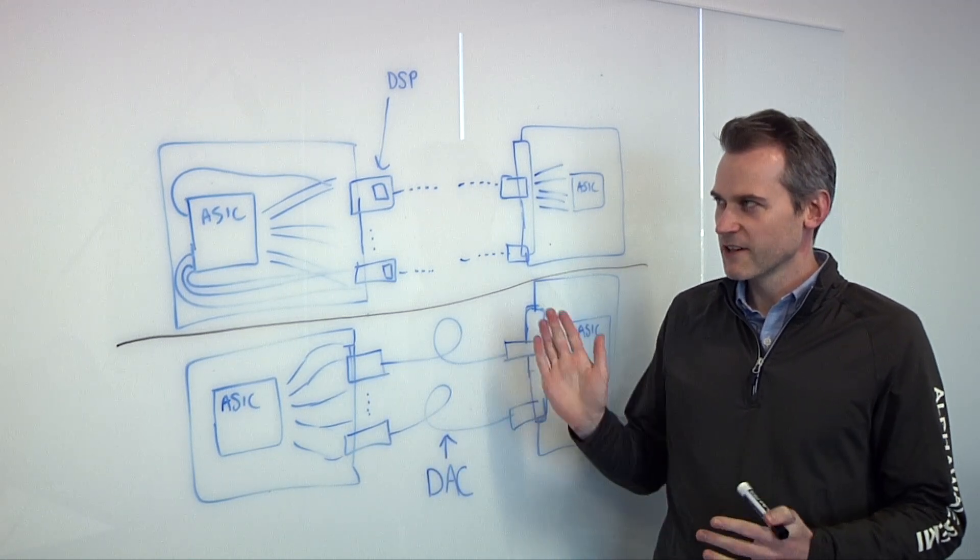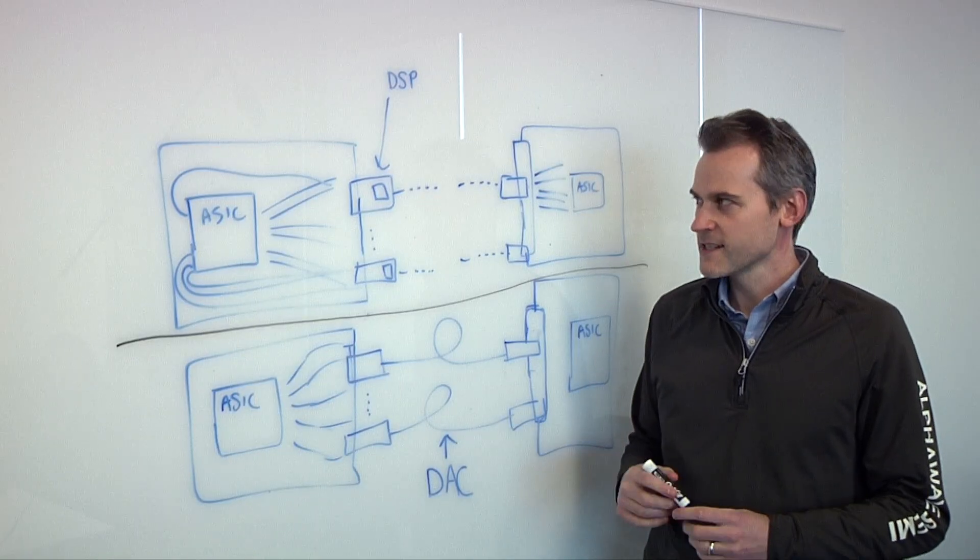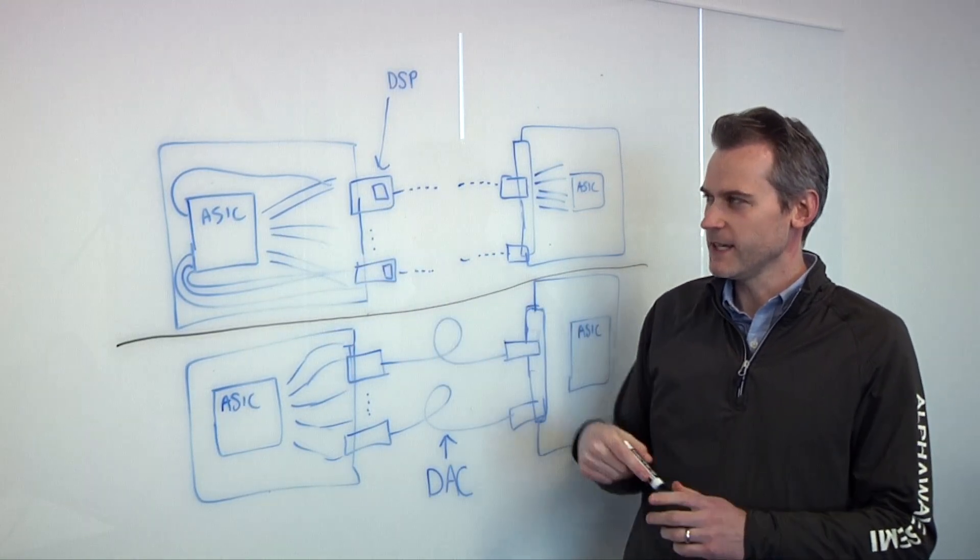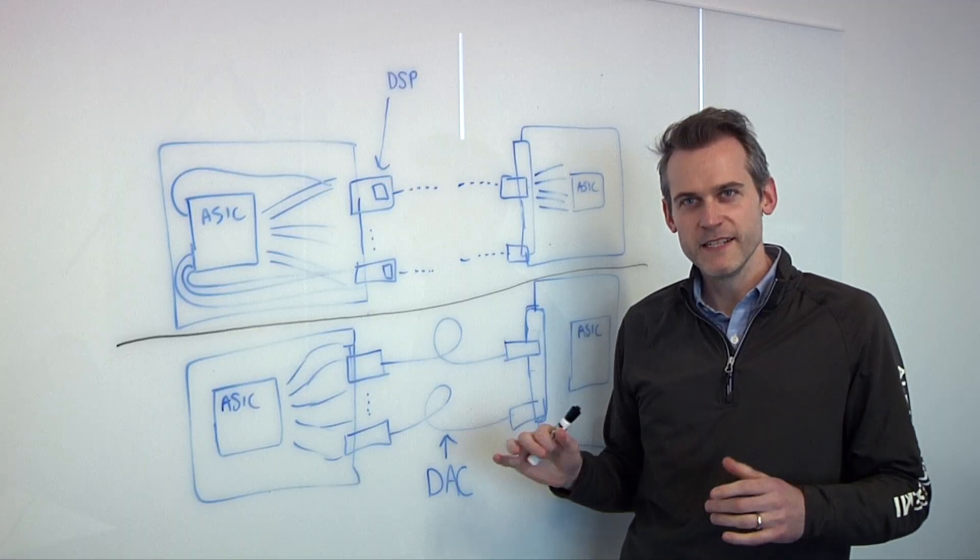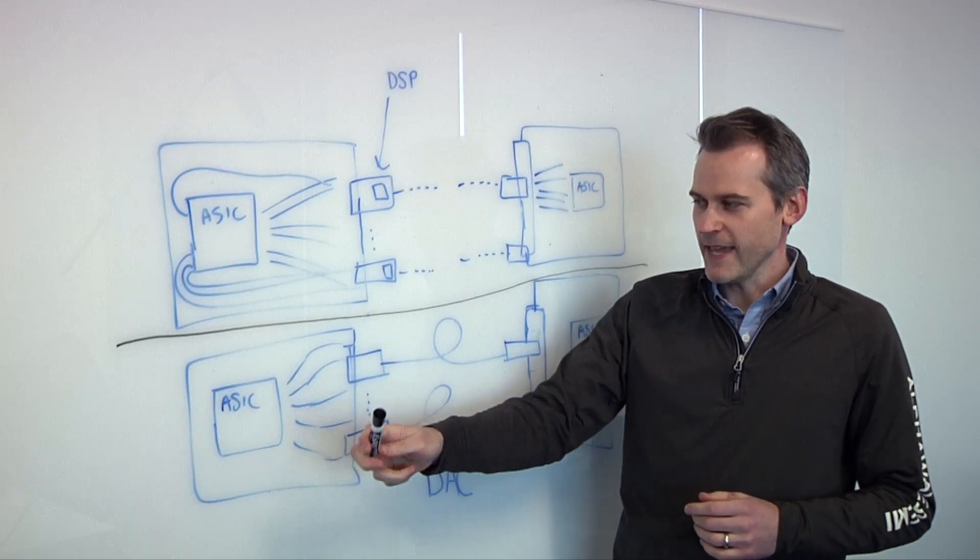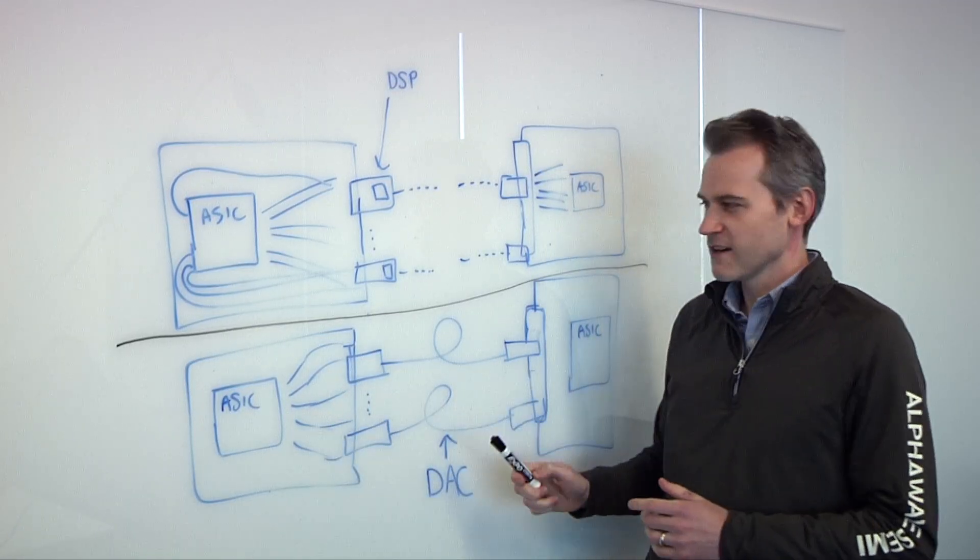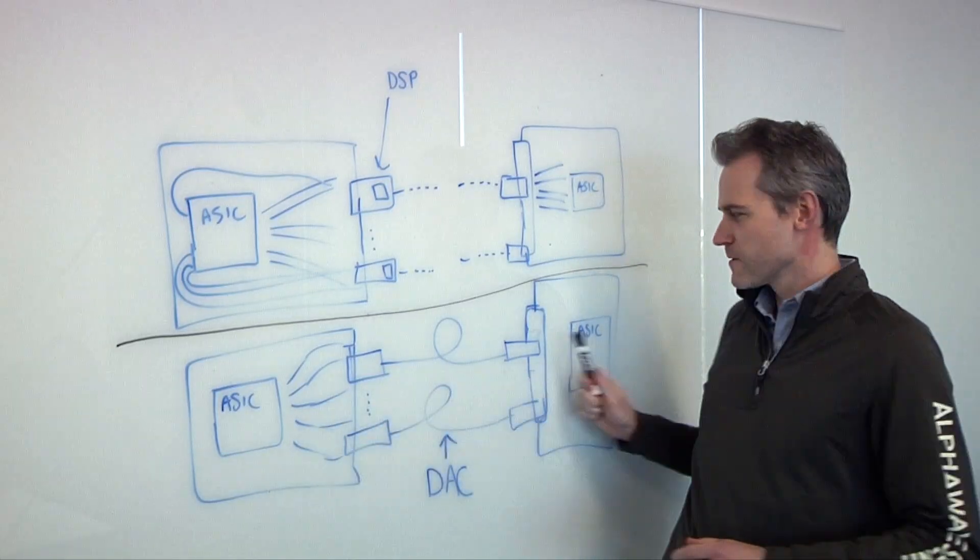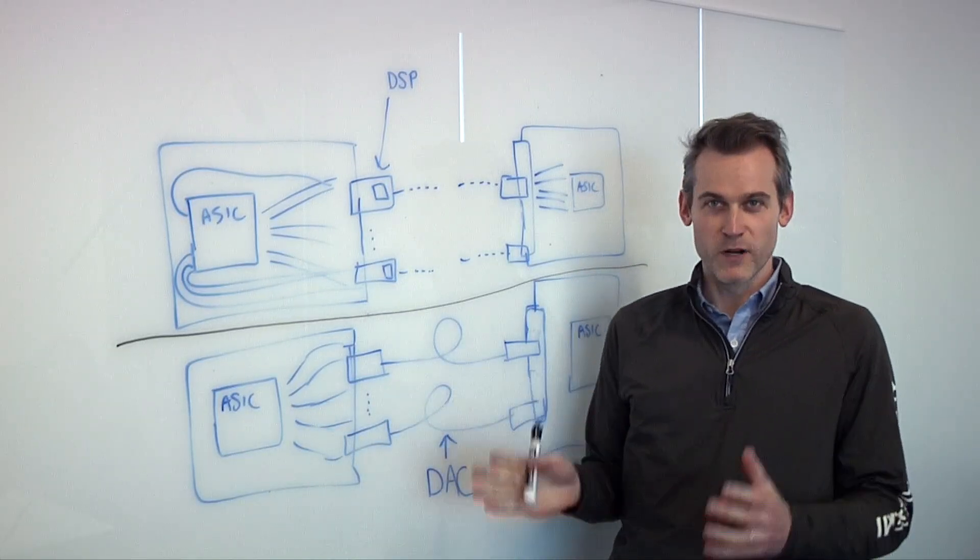At 100 gig or earlier rate Ethernets, this loss from the host ASIC to the DSP would be about 16 dB. That's the link budget. And for a passive copper DAC from one ASIC to another, it would be about 40 dB. And so that was at 100 gig per lane.